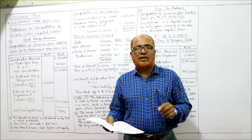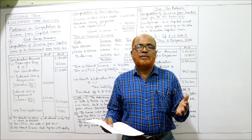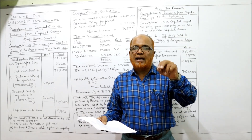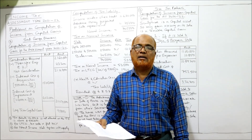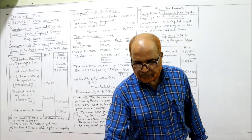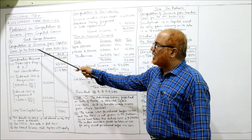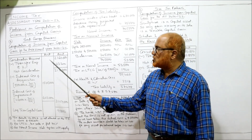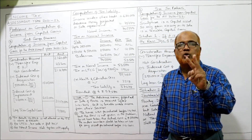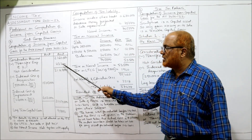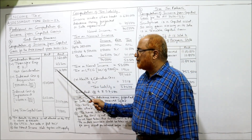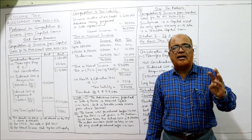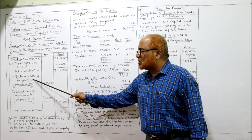The index number 109 is for 2003-2004, the year in which improvement was made, so we use it to compute indexed cost of improvement. For any asset purchased before 1/4/2001, the index number is taken as 100. Now in the computation: consideration received is rupees 21,60,000. Selling expenses at 2% of 21,60,000 = rupees 43,200. Deducting that gives net consideration of rupees 21,16,800.